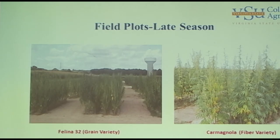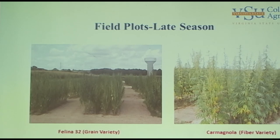These are the same plants from last year. This is Felina 32, a grain variety. That one there is a fiber variety — fiber varieties are tall and go up to seven feet tall; these are a little shorter. The plants looked good. As I said, these were planted May 27th when there was a lot of moisture, so growth was good.